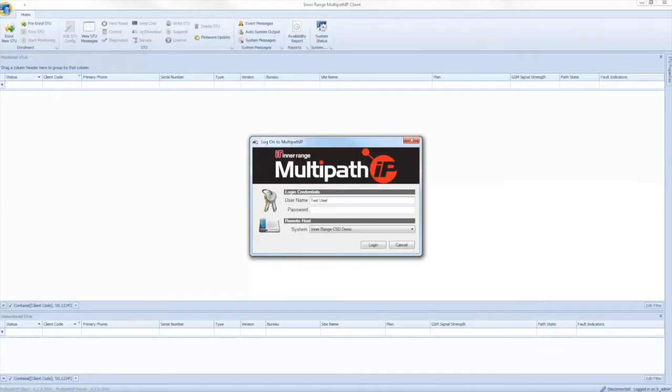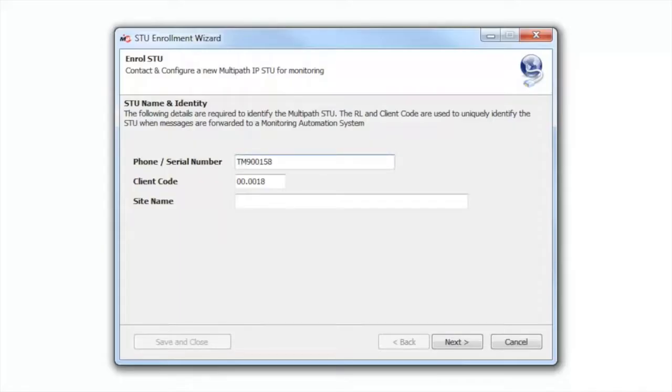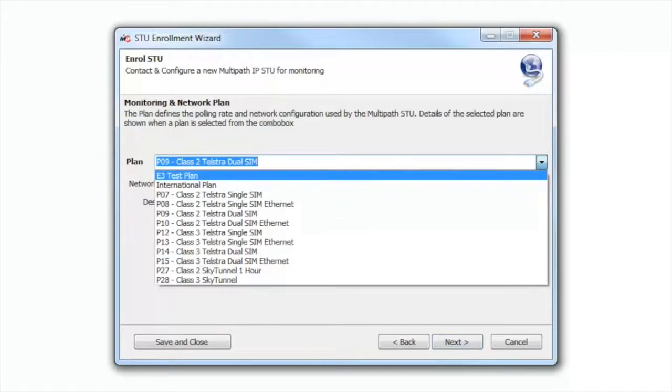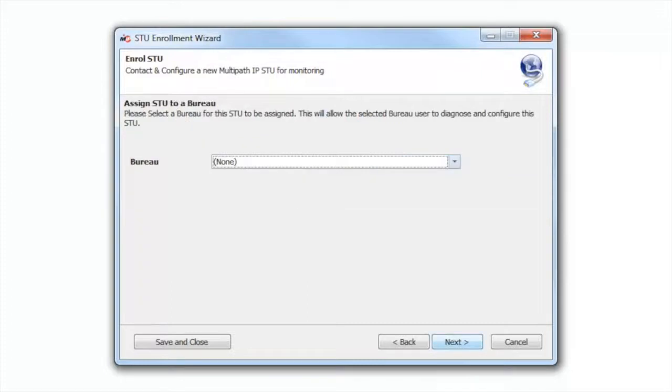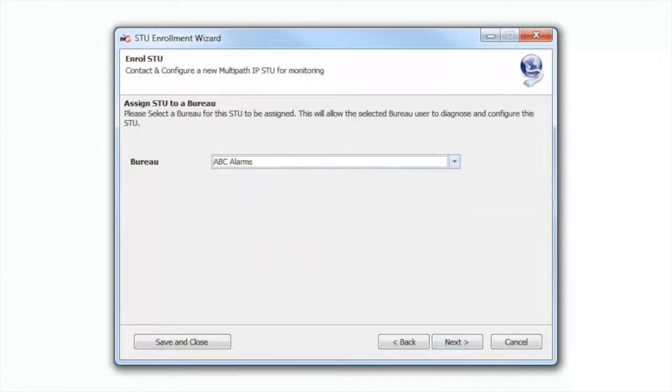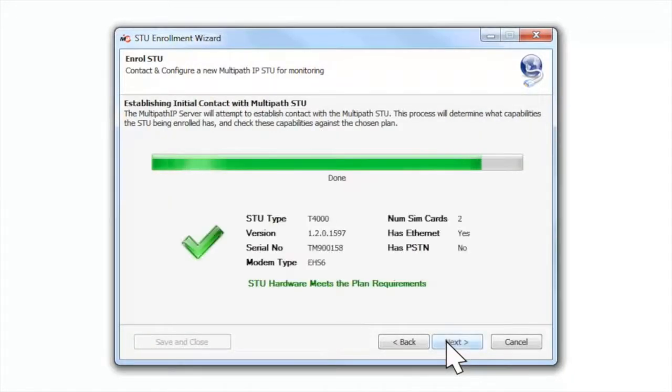First, log in to the Multipath IP client software. Click the enroll new STU icon and enter the T4000's serial number, client code, and site name. Select a plan for this site. The plan will determine the T4000's polling rate and supervision time. Select the bureau that the T4000 belongs to. The system is now fully programming the T4000.